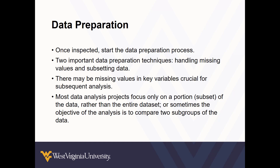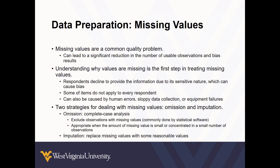Sometimes the objective of the analysis is to compare two subgroups of a larger data set, and in either of these scenarios, subsetting becomes enormously helpful and important for conducting a meaningful analysis. Missing values are a common data quality problem, but they can lead to a significant reduction in the number of usable observations as well as introduce bias into the results. The very first step to treating missing values is figuring out why they're missing.